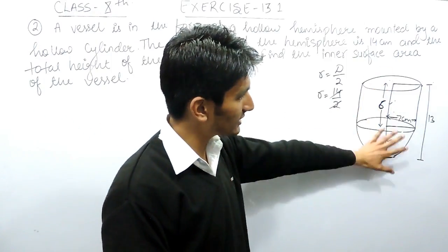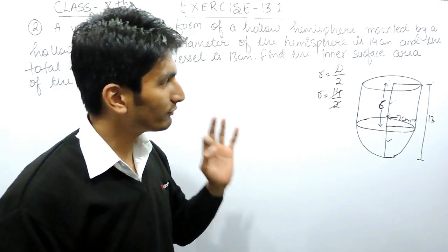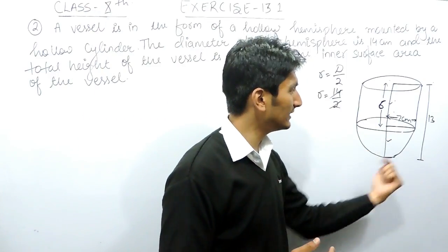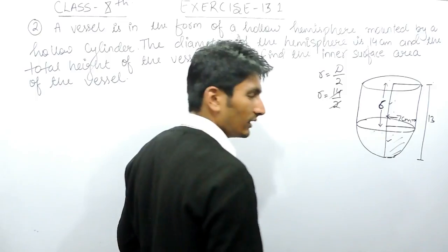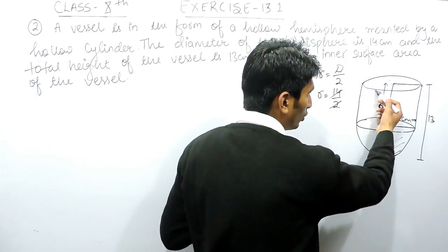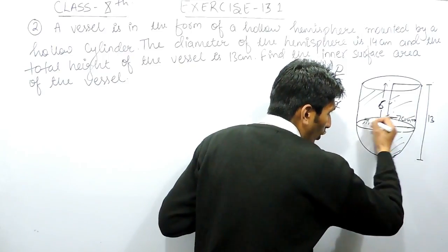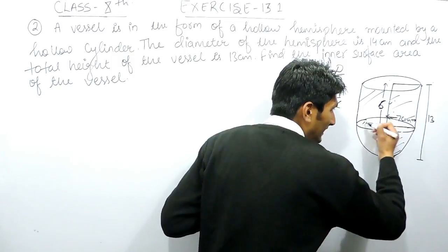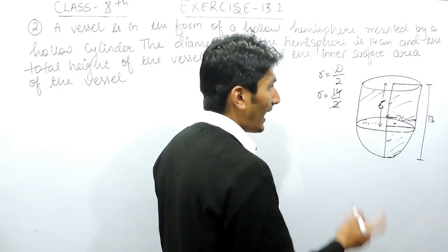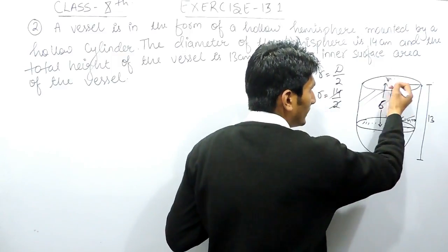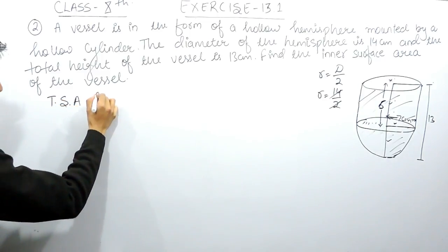To find the outer surface area, you need to find the surface area visible to you. The curved surface area of the hemisphere and the curved surface area of the cylinder are both visible. The circular area at the base of the cylinder — where it attaches to the hemisphere — is not visible, so we don't include it. Since the vessel is hollow and open at the top, we also don't calculate the area of the top.